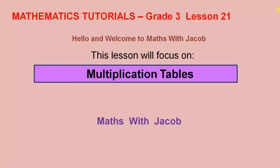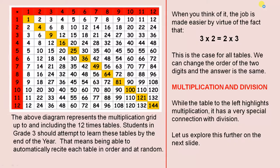Hello and welcome to Maths with Jacob. This lesson will focus on multiplication tables. The above diagram represents the multiplication grid up to and including the 12 times tables. Students in grade 3 should attempt to learn these tables by the end of the year — that means being able to automatically recite each table in order and at random.